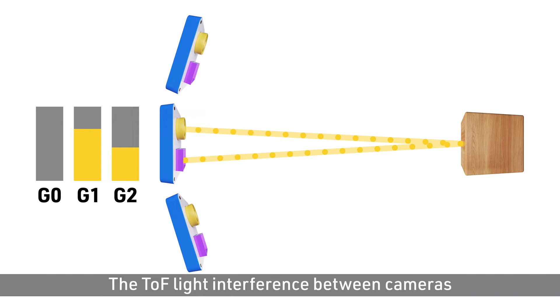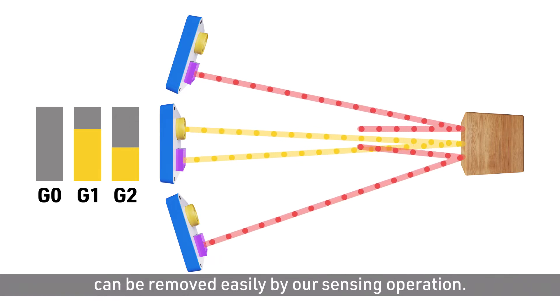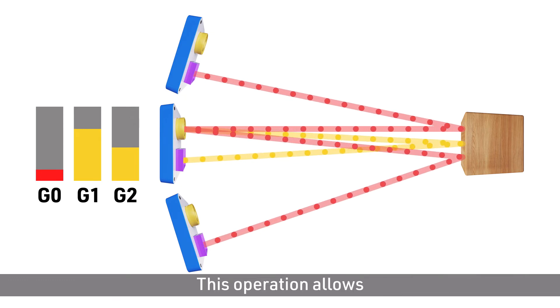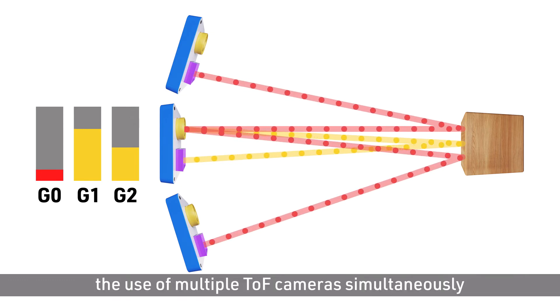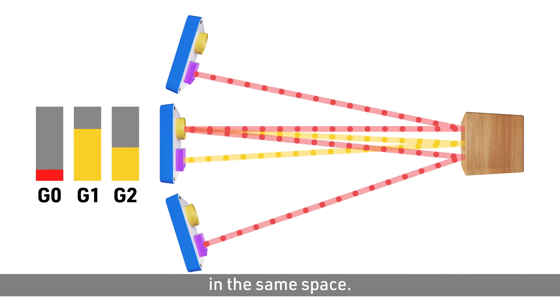The TOF light interference between cameras can be removed easily by our sensing operation. This operation allows the use of multiple TOF cameras simultaneously in the same space.